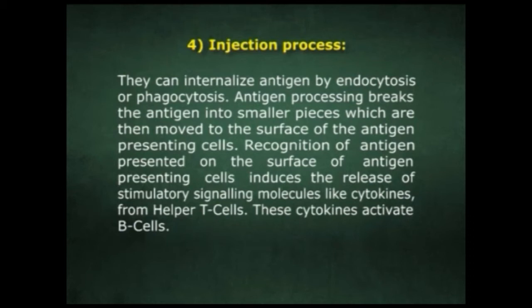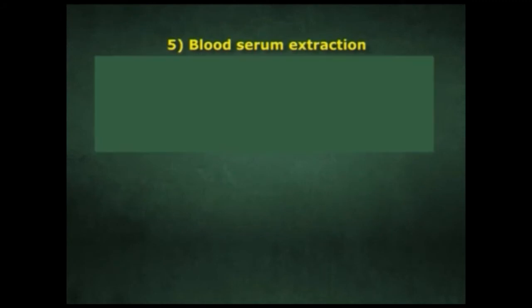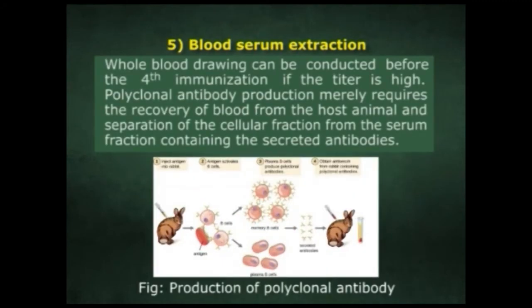Recognition of antigen presented on the surface of antigen-presenting cells induces the release of stimulatory signaling molecules like cytokines from helper T cells. These cytokines activate B cells, which recognize the antigen through their B cell receptor. Activated B cells divide to create both memory B cells and plasma cell populations. Plasma cells secrete antibodies into the serum for immune recognition, while memory B cells persist longer, providing a quick response to secondary antigen exposure.